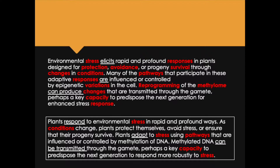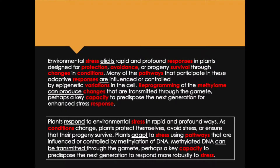Now, what about the second part of the first sentence? I ended the first sentence much sooner than the original and made the second part into its own sentence: 'As conditions change, plants protect themselves, avoid stress, or ensure that their progeny survive.' I took the word 'protection,' which is an abstract noun, and changed it to an active verb: 'protect.' Similarly, I took the abstract noun 'avoidance' and changed it to the verb 'avoid.'